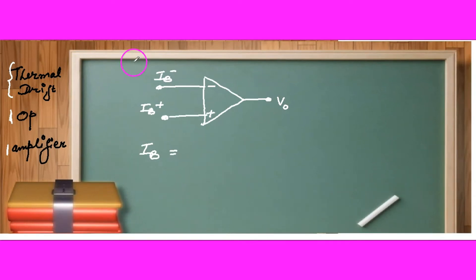For ideal op amplifier, there should not be any bias current. But if it is real, there will be bias current. If the op amplifier is made up of bipolar transistors, then bias current may be approximately 500 nanoamperes. And if the op is made up of FET field effect transistor, then the bias current may be up to 50 picoamperes.